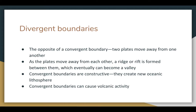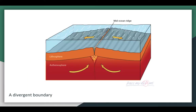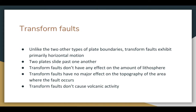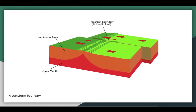Divergent boundaries can also cause volcanic activity. Here's a diagram of a divergent boundary in the ocean — you can see the plates moving apart and also moving up to create that little ridge. Then we have transform faults, which unlike the other two types of plate boundaries, the plates aren't moving towards each other or away from each other — they're sliding past each other, so it's horizontal motion. They don't have any effect on the amount of lithosphere or the topography of the area, and they don't cause any volcanic activity. This is a GIF of that happening.